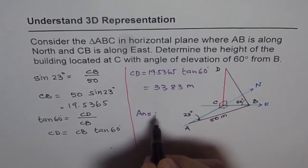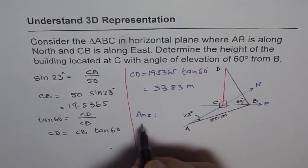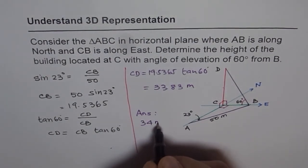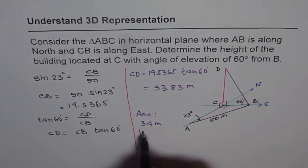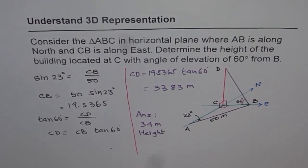The answer is, the height of the building is, you can round your answer to whole number and say 34 meters. So that is the height of the building. That is how you can solve such questions. Thank you.